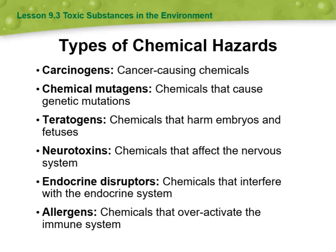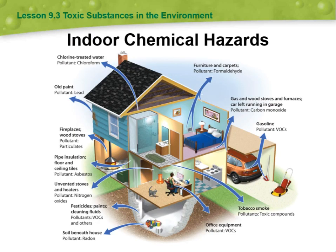Endocrine disruptors are chemicals that interfere with the endocrine system, and allergens are chemicals that over-activate the immune system. One example of an indoor chemical hazard is formaldehyde.